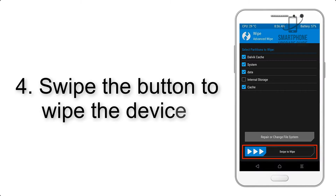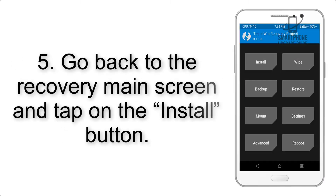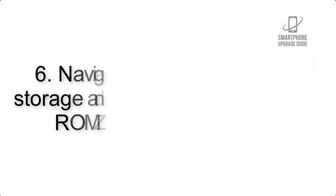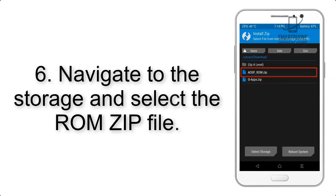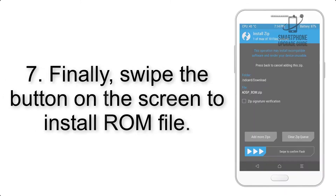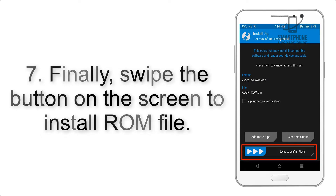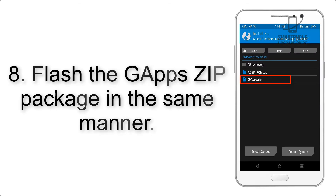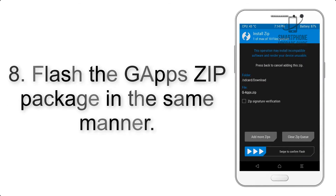Step 4: Swipe the button to wipe the device. Step 5: Go back to the recovery main screen and tap on the Install button. Step 6: Navigate to the storage and select the ROM zip file. Step 7: Swipe the button on the screen to install the ROM file.